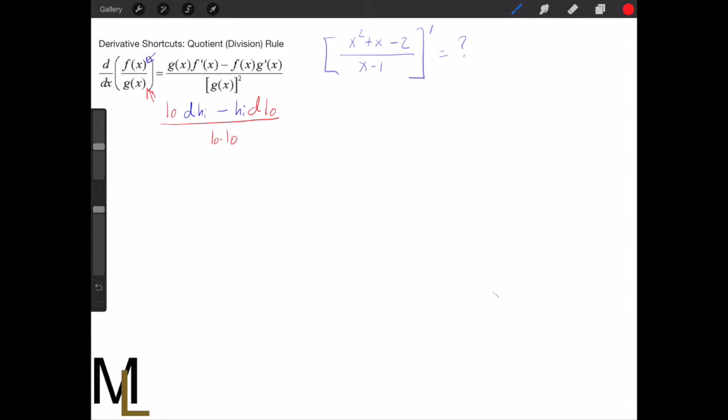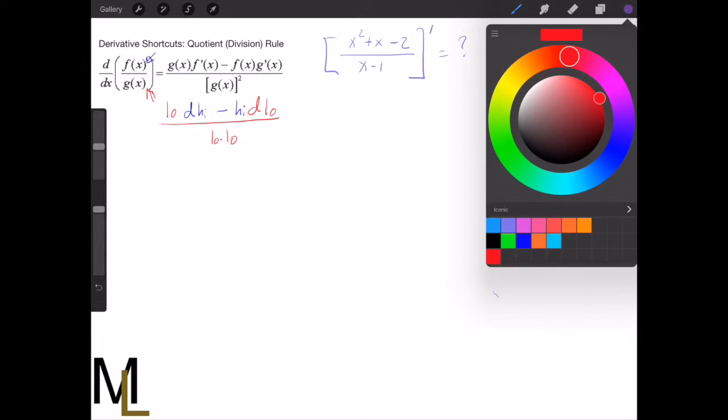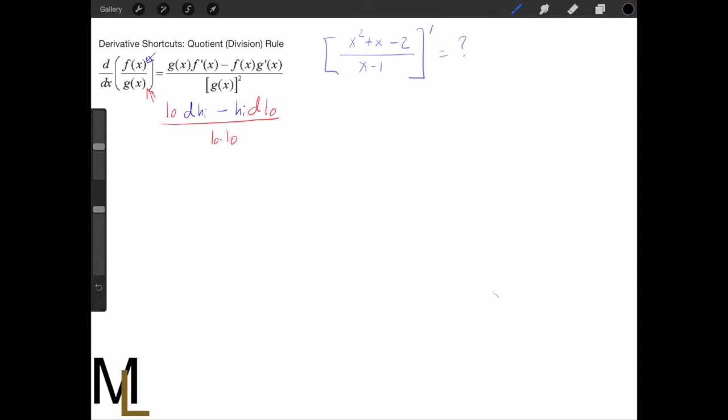Okay, so using this, you can calculate the derivatives of two functions divided by each other. So in order to show this, we'll do the same thing we did with the quotient rule. So I'll solve this problem once through algebra, and then a second time through the quotient rule. And hopefully they match.